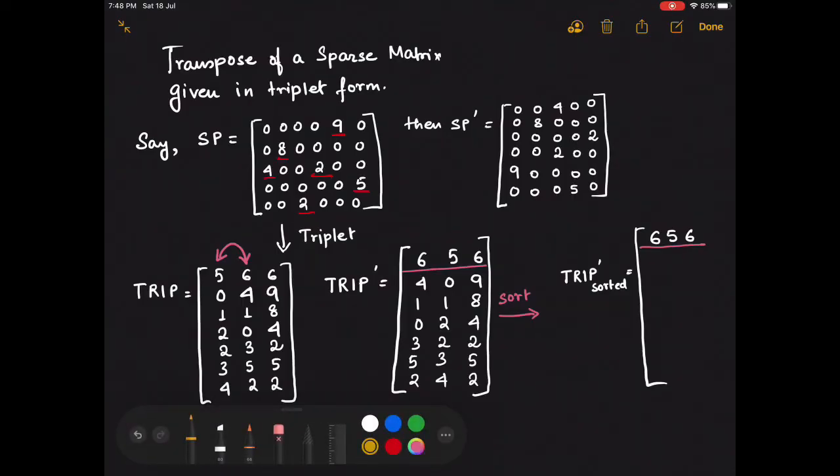For the rest of the remaining elements, the element with the minimum value of row number is 4 whose row number is 0 and column number is 2. Accordingly this particular row entry gets copied into the TRIP dash matrix. The next element with minimum row number is 8 whose row number is 1 and column number is also 1. So this is the next row that is going to get copied from TRIP dash to TRIP dash sorted.